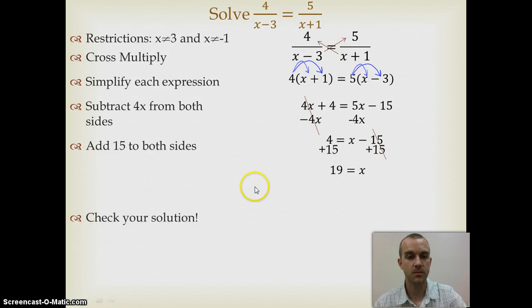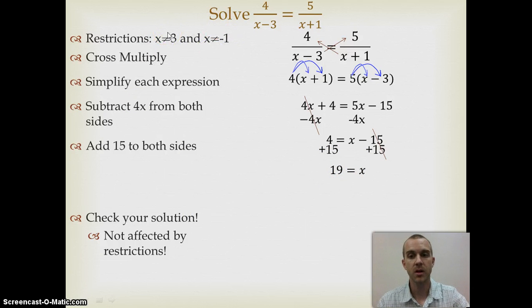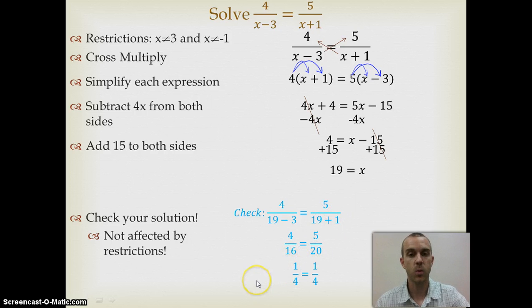So now I check my solution. Well first, 19 was not part of my restricted group, so I'm okay there. Now I'm going to plug it in to make sure I solve my problem correctly. So if I plug in 19 minus 3, that gives me 16. 19 plus 1 gives me 20. I simplify. That's 1/4 equals 1/4. Again, I'm correct.